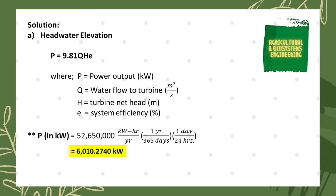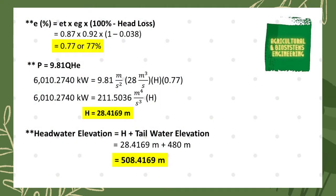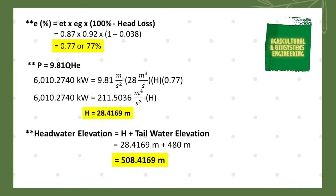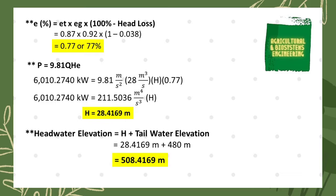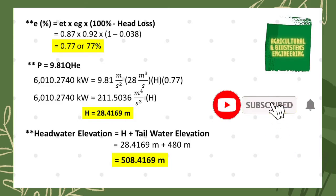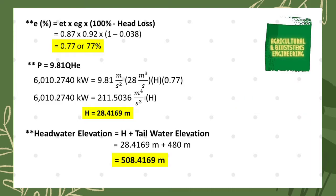Next, we solve for the overall system efficiency using the formula: Ep times Eg times the quantity (1 minus the head loss fraction). Substituting in decimal form: 0.87 times 0.92 times (1 minus 0.038). This gives an efficiency of 0.77, or 77%.